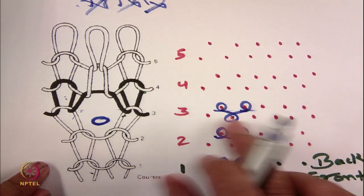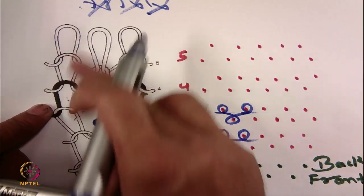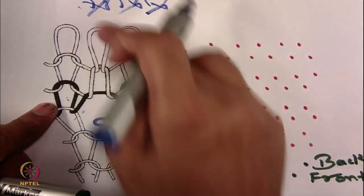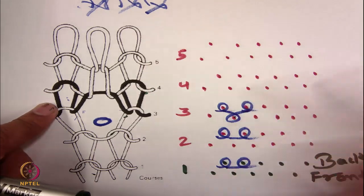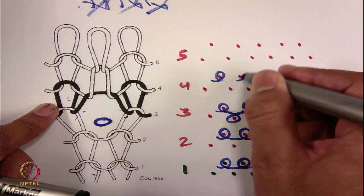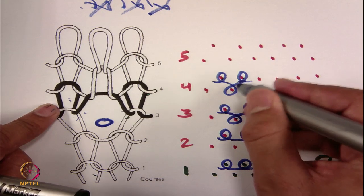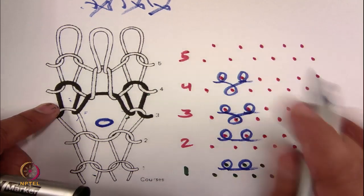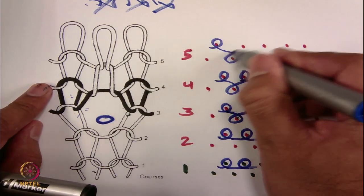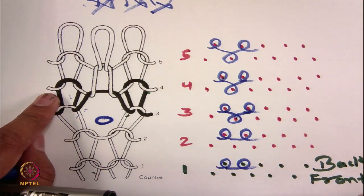Two back bed needles, one front bed needle. In the fourth and fifth courses the same applies — these two needles make technical back, this needle makes technical front, and the front and back bed loops are connected. This is the normal rib notation, and the fifth course looks the same. This is the fabric notation for a double jersey fabric.